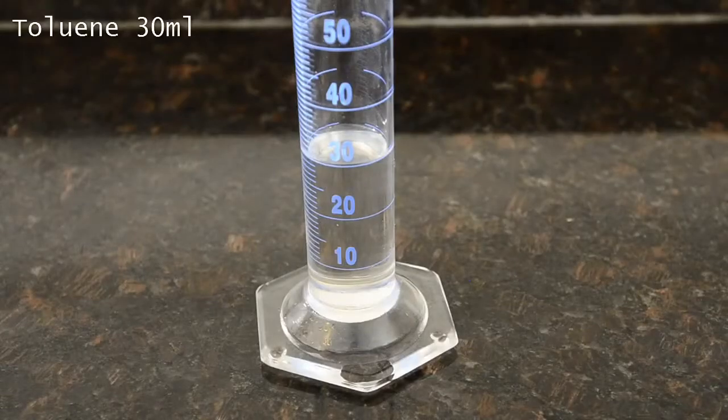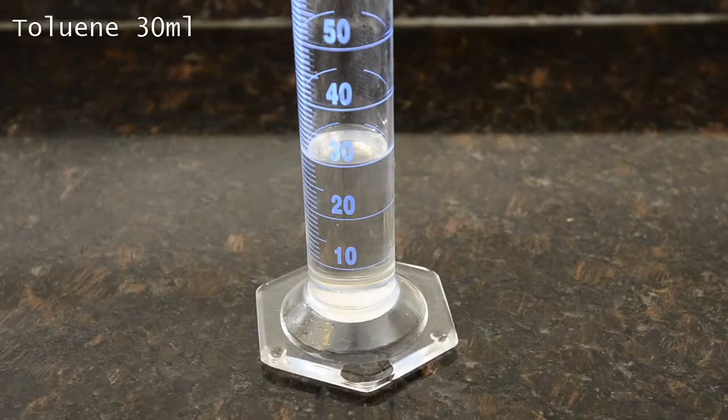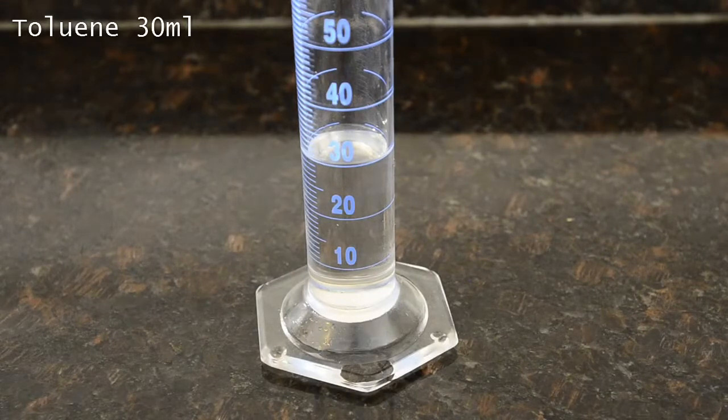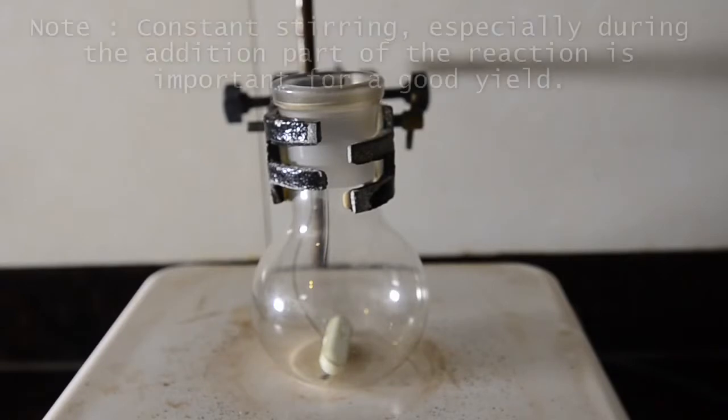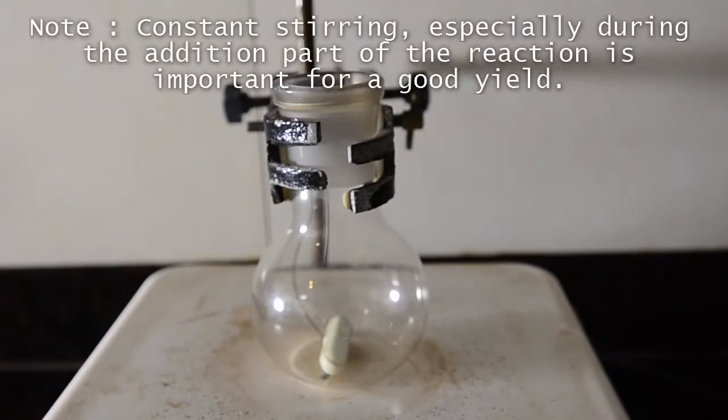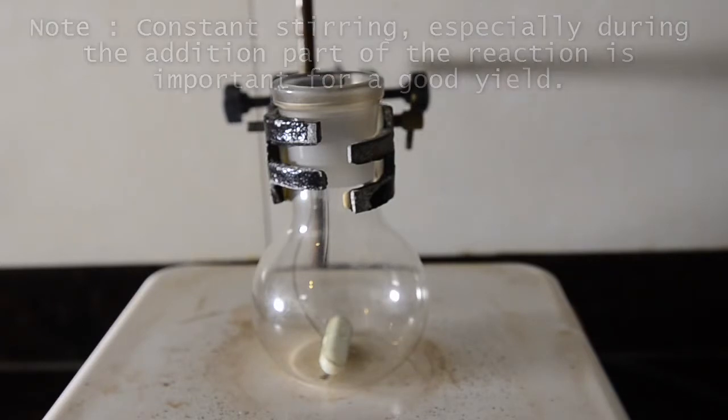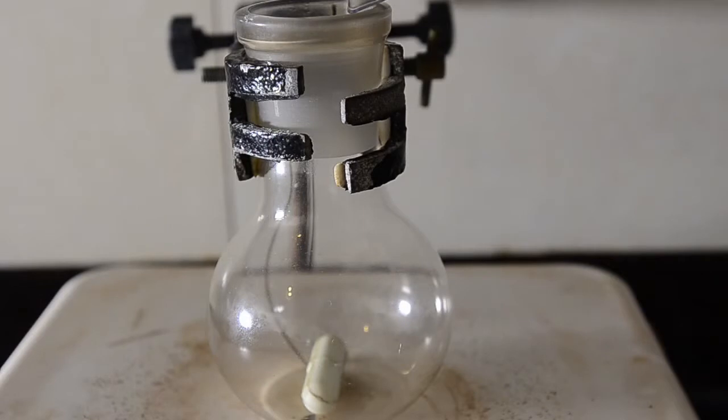Let's get started. First of all, measure out 30 ml of dry toluene. Set up the 100 ml flask equipped with a large magnetic stir bar. Note that stirring is extremely important in this reaction, especially at the beginning. Add the toluene to the dry flask.